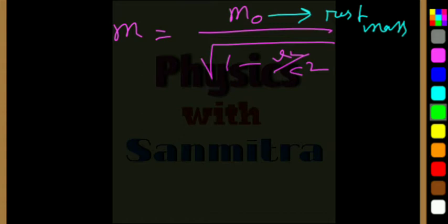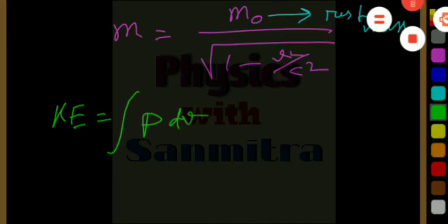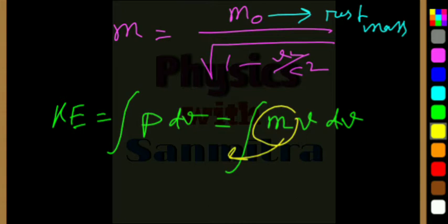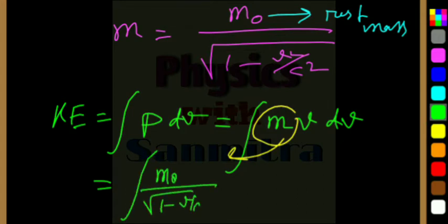Now, in this case, we cannot take out m as constant, but we have to integrate it in this fashion. Let's see, integration of p into dv. What is p? P is my mass into velocity, m into v into dv. But here, I cannot take out m outside, because this mass is actually a function of velocity. So, I have to substitute the actual value, m0 by root over 1 minus v squared by c squared, v into dv. This is what I will be getting.